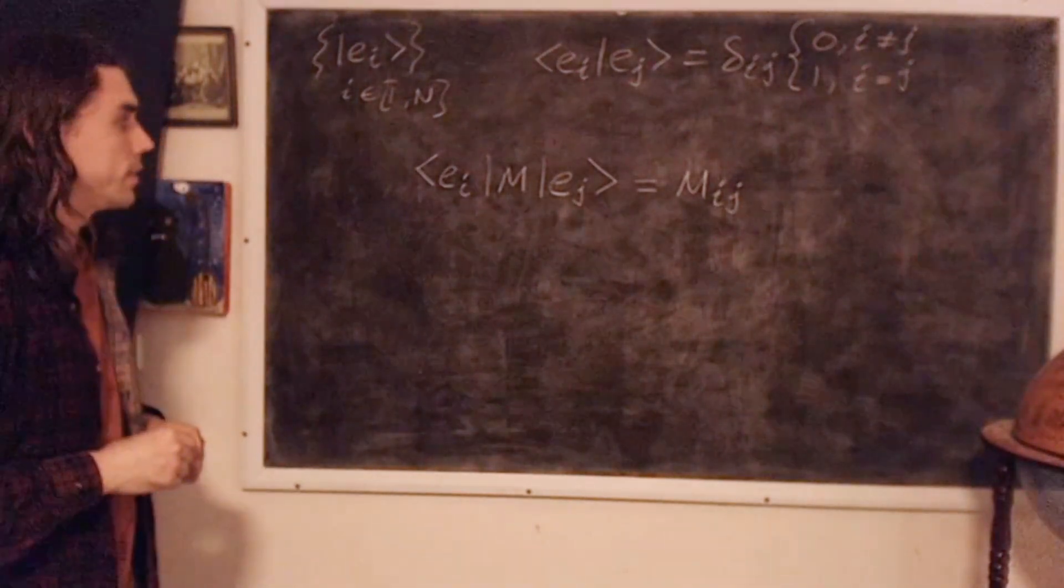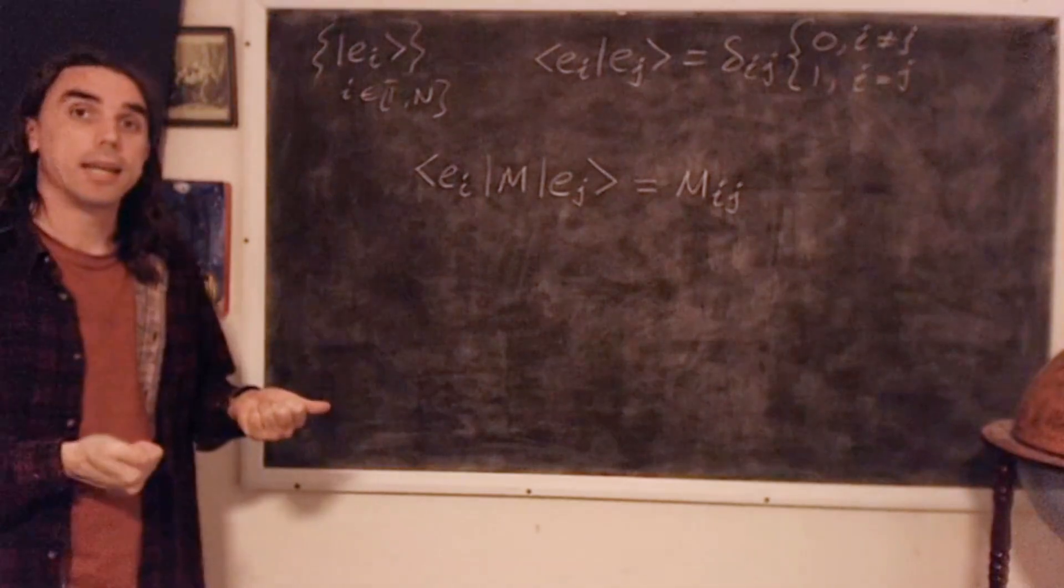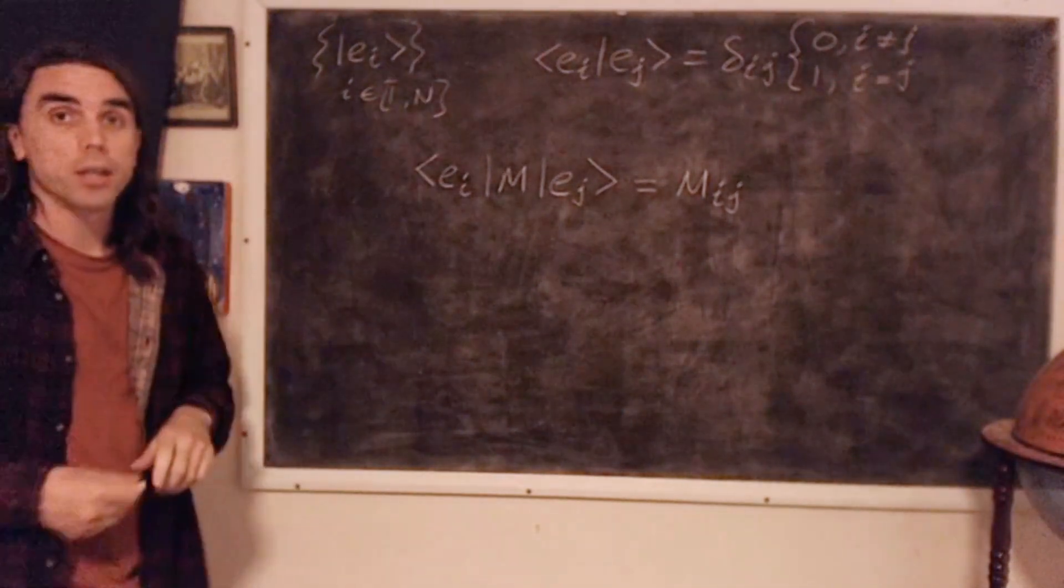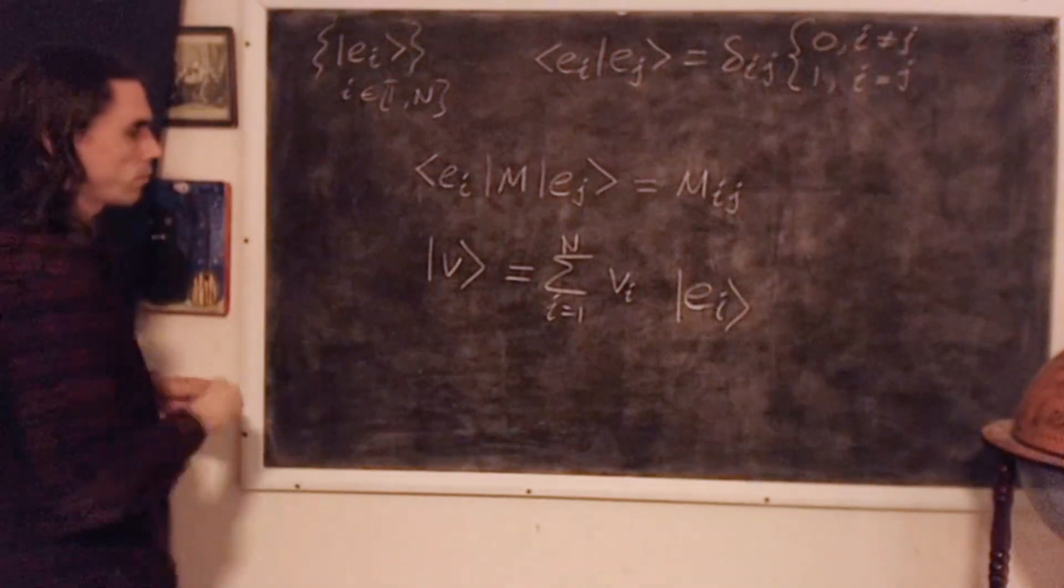So we can, for example, sandwich a matrix between two basis vectors, and we'll simply select out element IJ of the matrix. Similarly with vectors,